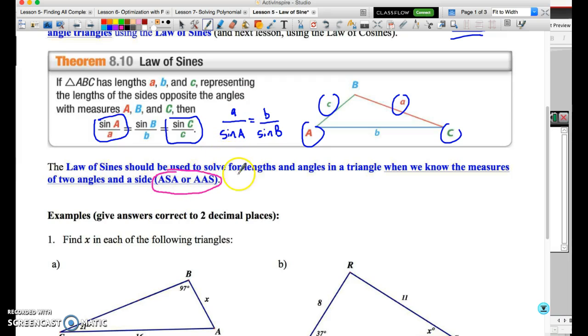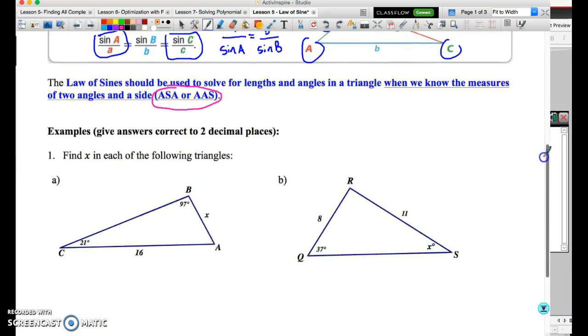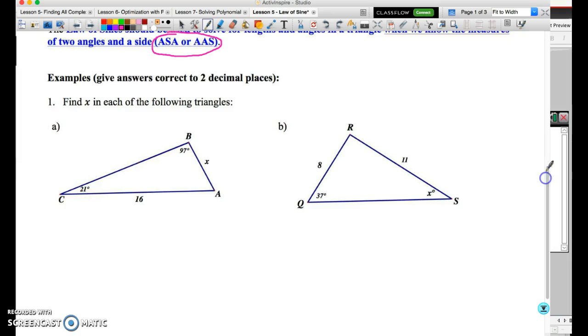And then when we have ASA or AAS, in other words, two angles and a side. Of course, if we have two angles and a side, we know because of the fact that angles of a triangle add to 180, once I give you two angles, you automatically know the third angle as well. So let me show you in the next two examples exactly how this works, and then we'll move on to the more complicated explanation of the ambiguous case.